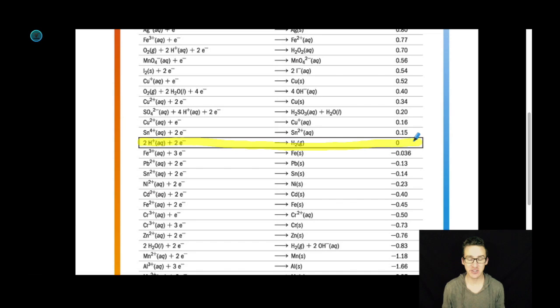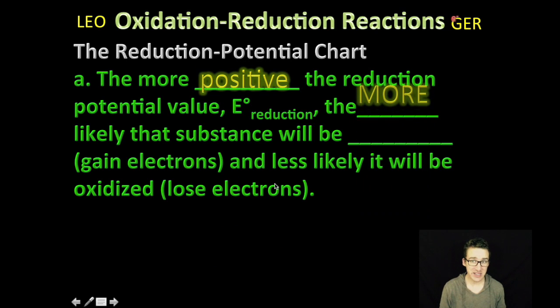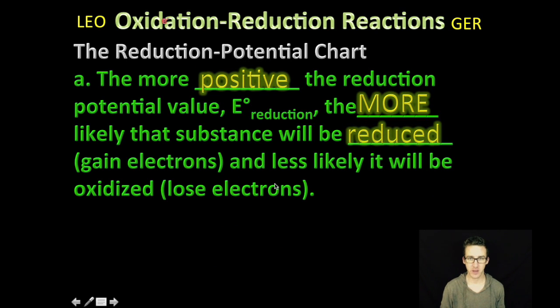Everything else in their ability to gain electrons is going to be compared to how easy it is for the hydrogen ion to gain electrons. So the more positive the reduction potential is, and we're going to use this little E sub reduction symbol, the more likely that substance will be reduced or gain electrons, and less likely that it will be oxidized or lose electrons.